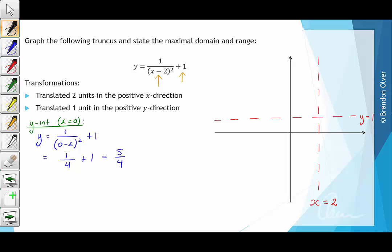So we have our y intercept occurs at 0 comma 5 over 4, which is this point somewhere around here.